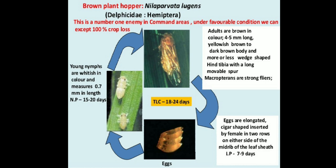The third pest is the brown plant hopper, Nilaparvata lugens, belonging to the family Delphacidae, order Hemiptera. Adults are brown in color, 4 to 5 mm long, yellowish brown to dark brown, more or less wedge-shaped, with hind tibia having a large movable spur. Macropterous forms are strong flyers. Young nymphs are whitish in color and measure about 0.7 mm in length. The nymphal period is about 5 to 20 days. Eggs are elongated and cigar-shaped, inserted by the female in 2 or 3 rows on either side of the midrib of the leaf sheath, with an incubation period of about 7 to 9 days.